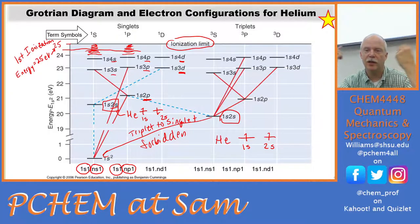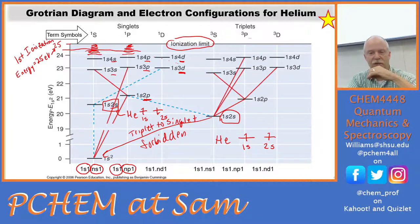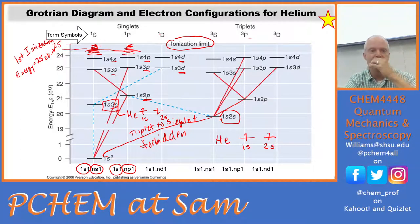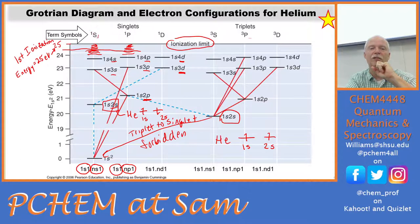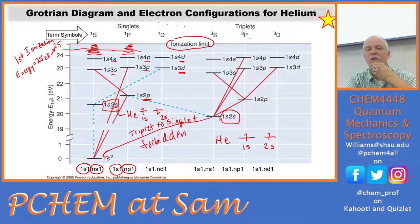Before we get into anything more complicated, let's make sure we understand helium. These term symbols labeled here are just a way to keep track of the different electron configurations and permutations — whether spins are up, down, paired, or not paired. We'll learn about those in a couple of lectures. You can't learn term symbols without knowing electron configurations really well, so we want to emphasize those today in the Grotrian diagrams.